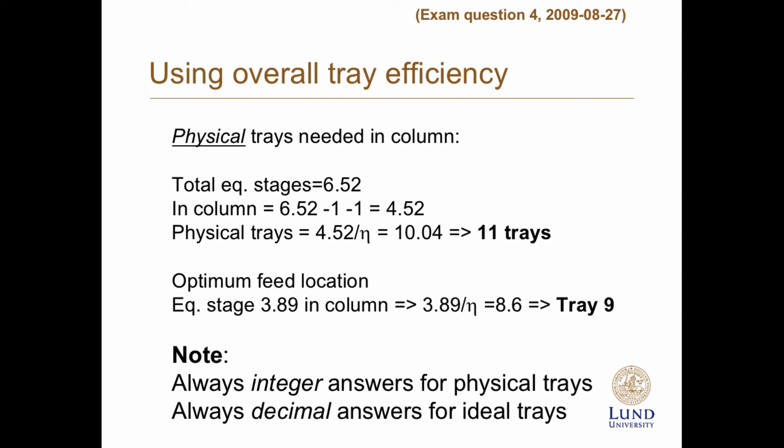The optimal feed location was 3.89 when we have deducted the partial condenser. And if we divide that with the overall tray efficiency of 0.45, we get 8.6 and we round that up to 9. If we ask you for the number of equilibrium stages, we want you to give a decimal answer. Otherwise you don't get full credits.